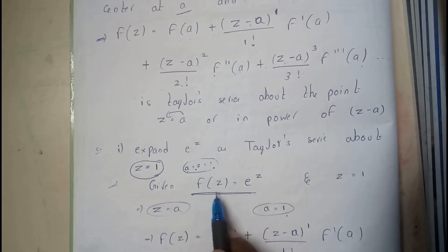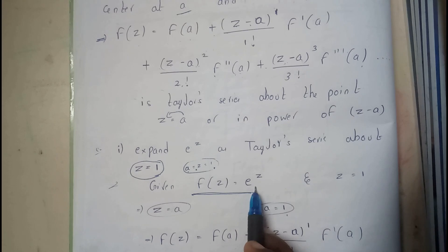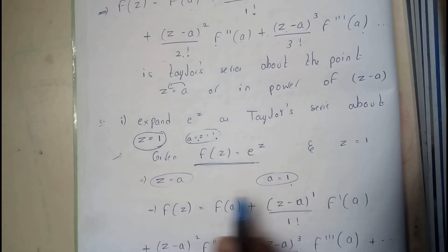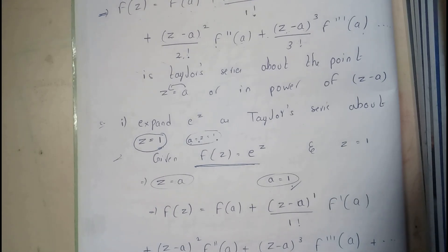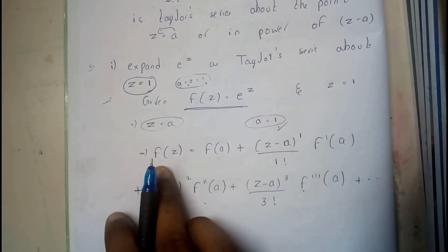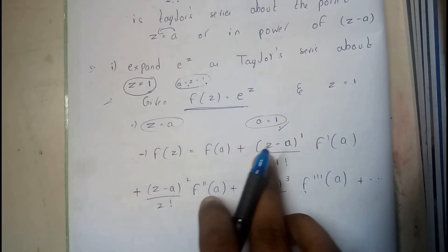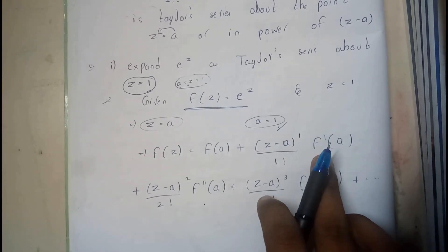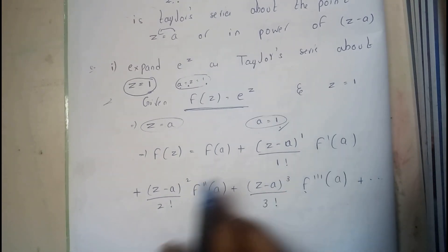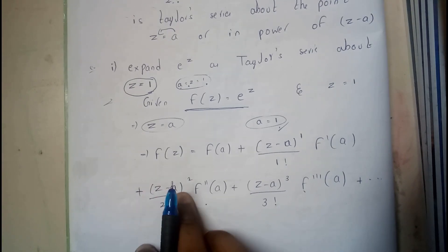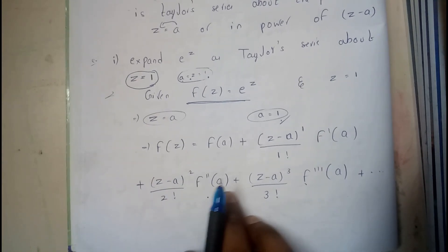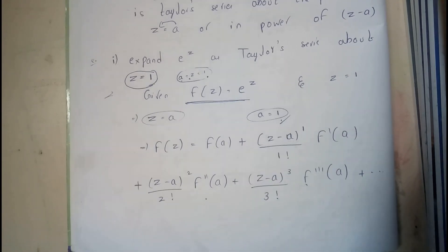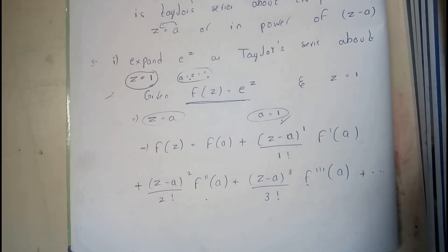Given function f(z) = e^z, and z = 1 is given. Since z = a, we have a = 1. The formula is f(z) = f(a) + (z−a)·(1/1!)·f′(a) + (z−a)²/2!·f″(a) + (z−a)³/3!·f‴(a) and so on up to infinity.